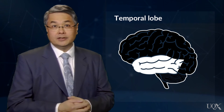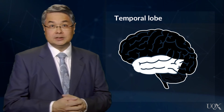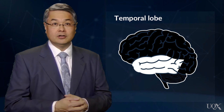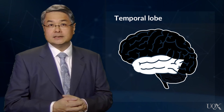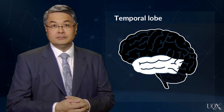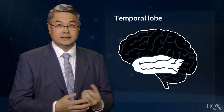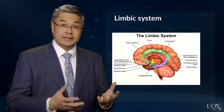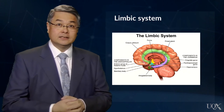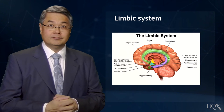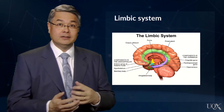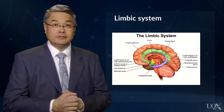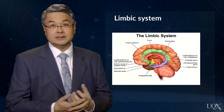The temporal lobe processes speech and vision and is also important to forming long term memory. Inside the temporal lobe is a section that plays a role in declarative and episodic memory. Inside that is the limbic system, which includes the hippocampus and the amygdala and many other organs associated with forming and processing memory.